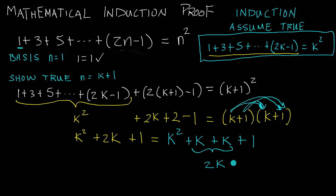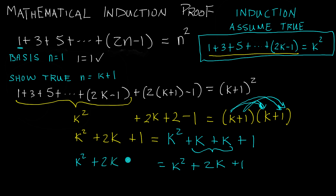Rewriting this, we have k squared plus 2k plus 1 on the right hand side. And on the left hand side we also have k squared plus 2k plus 1. So you can see that the left hand side is exactly identical to the right hand side.